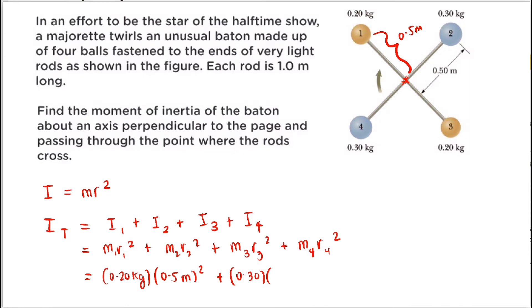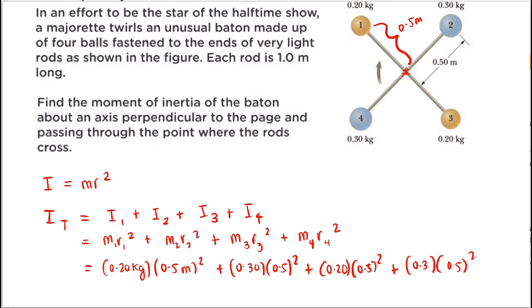For M3, the mass is 0.20 kg times (0.5)², and for M4, the mass is 0.30 kg multiplied by its distance from the axis of rotation, which is again 0.5 meters, so 0.30 × (0.5)². Therefore, the total Moment of Inertia of this baton is equal to 0.25 kilogram·meter squared.